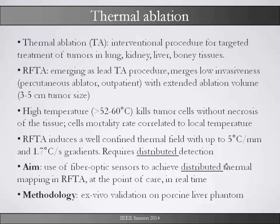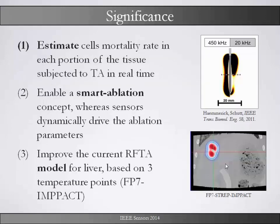The approach to destroy tumor cells in this research is with heat. If you expose cancer cells to a temperature over 50 degrees for one minute, they have a high probability to die. If you do it over 60 degrees they die nearly immediately. In this research we used radio frequency thermal ablation, which means there is a needle inserted into the tumor, and radio frequency is emitted which generates heat in the cells of the patient.